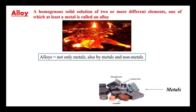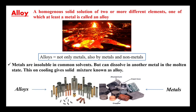At least one metal must be present in the alloy for it to be called an alloy. So alloys consist of not only metals but also metals and non-metals combined, but at least one metal must be present. Metals are insoluble in common solvents but can be dissolved in another metal in a molten state, and during the cooling process we obtain the alloy.